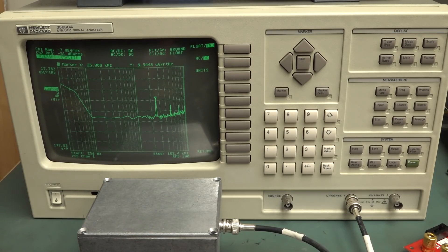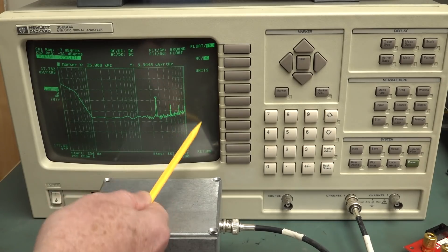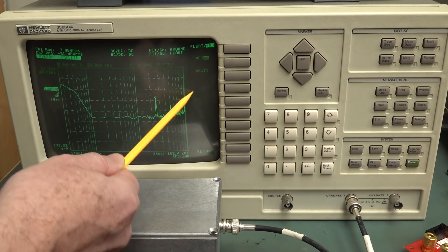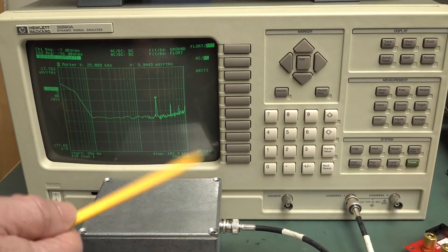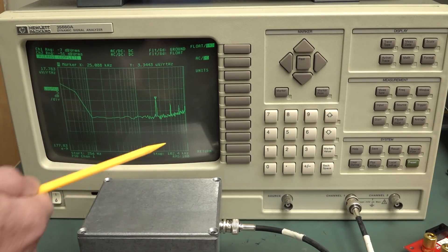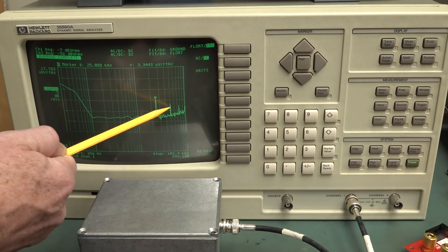Is that the switching frequency because the OPA189 is a chopper amplifier? No. Well, as I explained in a previous video, that's way off. It's up in like the 200 to 300 kilohertz region up here, which is beyond the measurement capability of this dynamic signal analyzer.